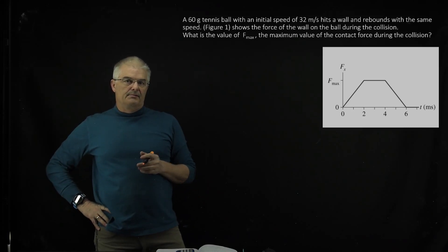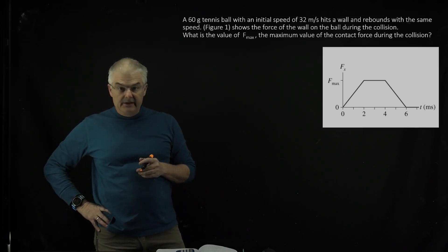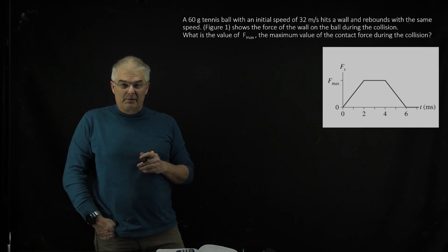So, a 60-kilogram tennis ball with an initial speed of 32 meters per second hits a wall and rebounds with the same speed.